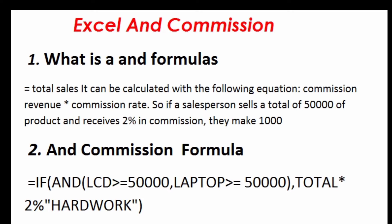So, if a salesperson sells a total of $50,000 of product and receives 2% in commission, they make $1,000. The commission formula is: if total is equal to 50,000, then total multiplied by 2%.